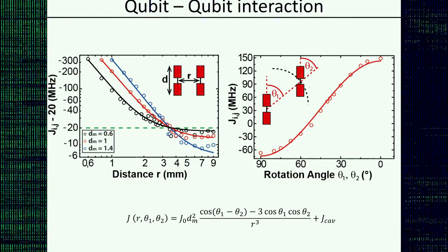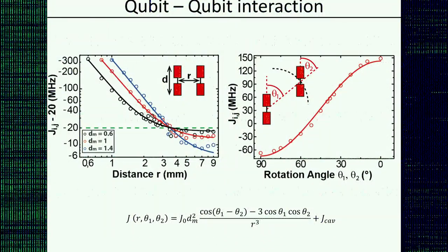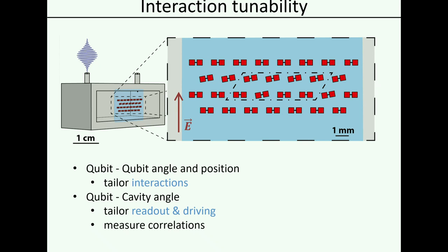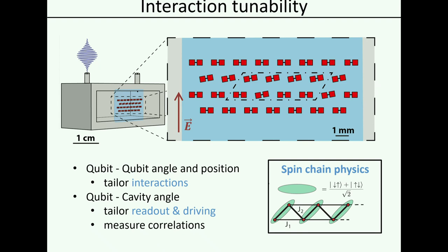These qubits really behave like dipoles — we can change the interaction strength just by rotating them or placing them at different distances. The idea is to tailor the interactions to the Hamiltonian we like. We can also rotate them in the cavity to only read out the qubits we are interested in and measure correlations. Trying to do that on something like 25 qubits is maybe not realistic since we couldn't learn what goes on — it would be too complicated and we wouldn't have enough knobs to turn. So maybe something like five to eight qubits in a central region would be feasible for small instances of spin chain physics or the XY model on a ladder.